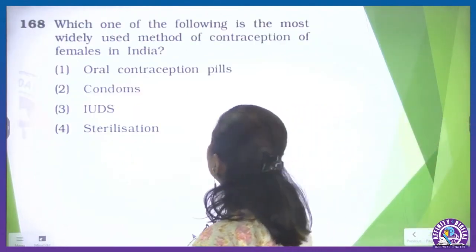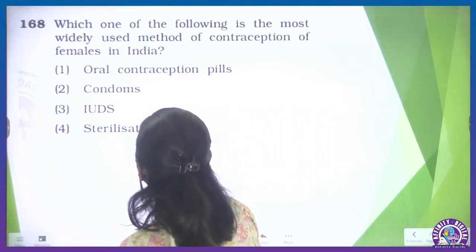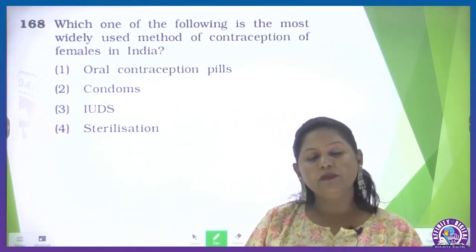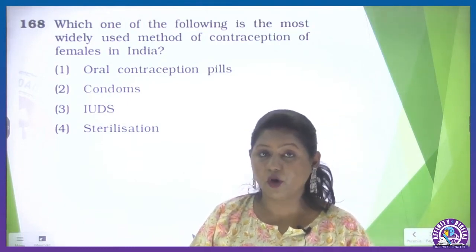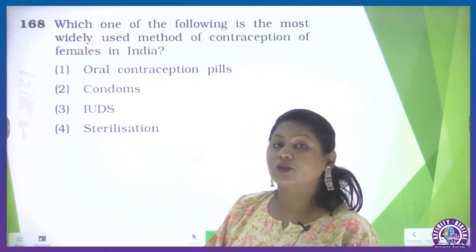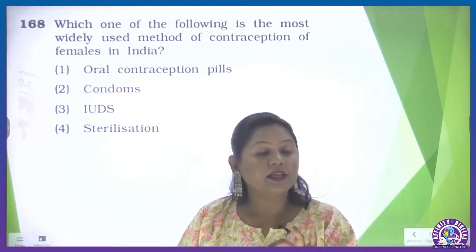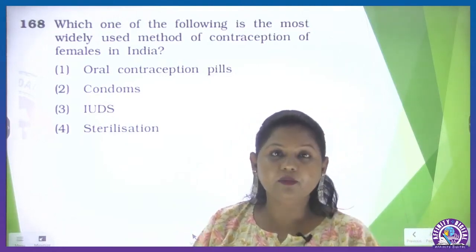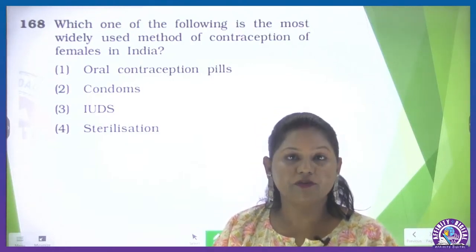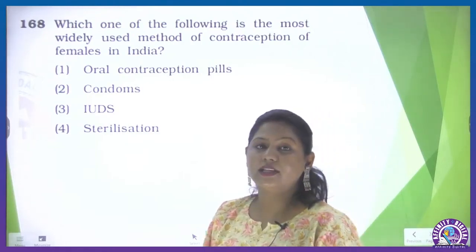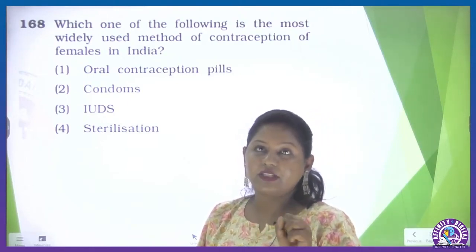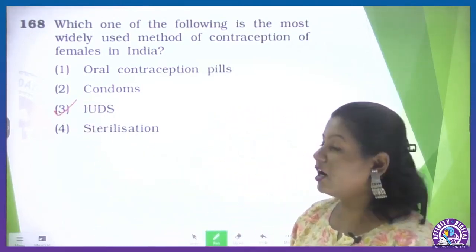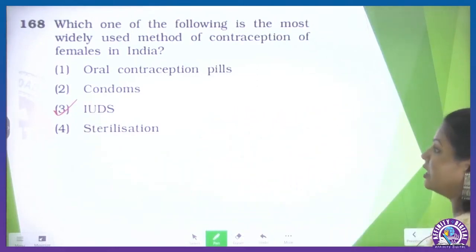Which is the most widely used method of contraception in females in India? Oral contraceptives require taking pills which are often forgotten and have side effects. Condoms are widely accepted in India but are used by males, not females. IUD has fewer side effects or no side effects, is used in India, and can provide contraception for three to five years. So this is widely accepted in urban areas — that is the IUD, the intrauterine device.